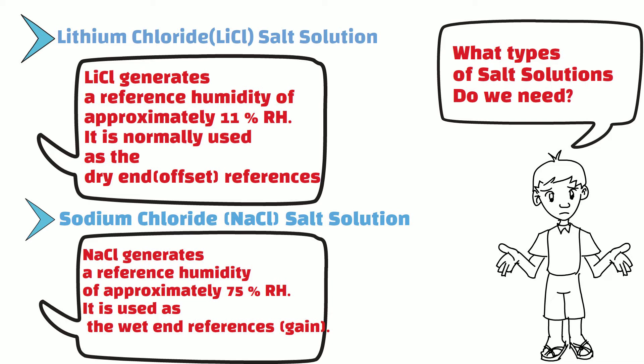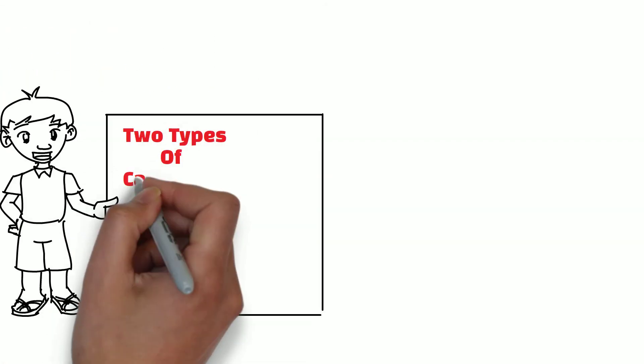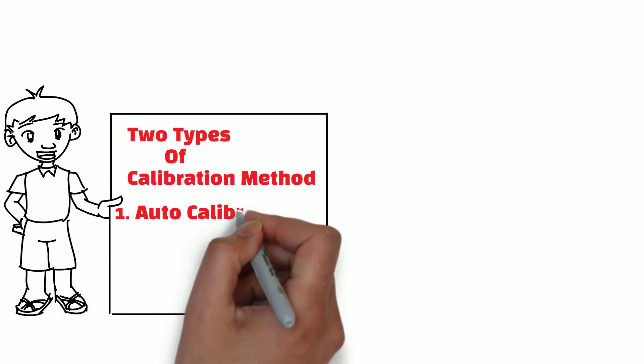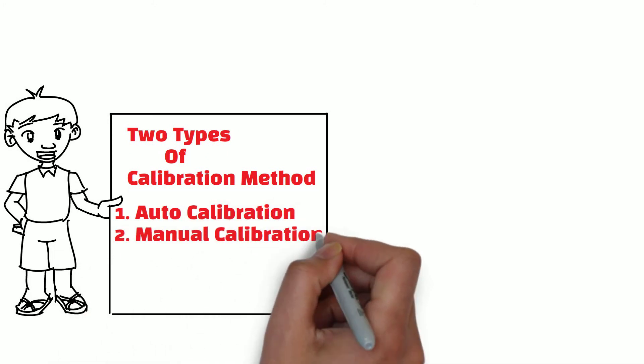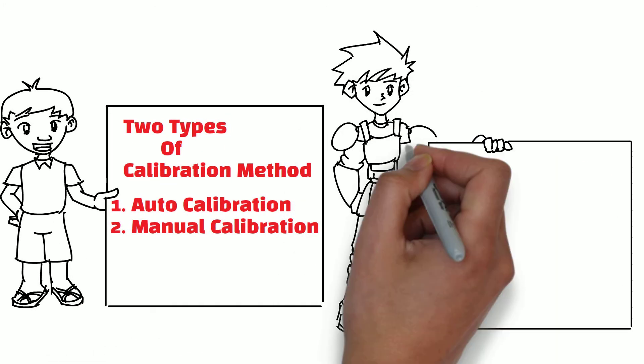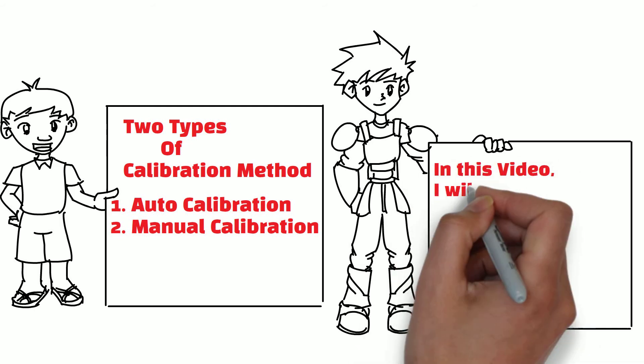There are two types of calibration methods. First method is auto calibration method and second method is manual calibration method. In this video, I will show you step-by-step procedure of manual calibration method.